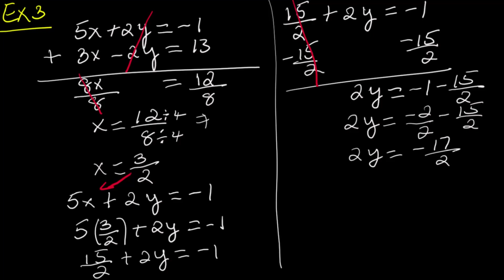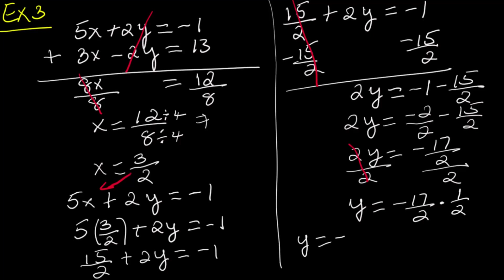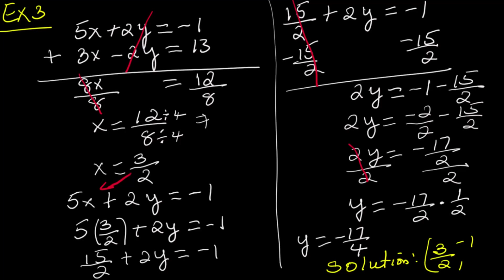Divide both sides by 2. This is a fraction divided by a whole number — to divide a fraction by a whole number, multiply the fraction by the reciprocal of the whole number. Y equals negative 17 over 2 multiplied by 1 over 2. Multiply 2 by 2 to get 4: y equals negative 17 over 4. The solution of the system is 3 over 2 comma negative 17 over 4.